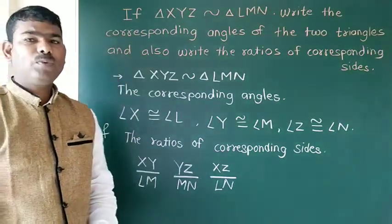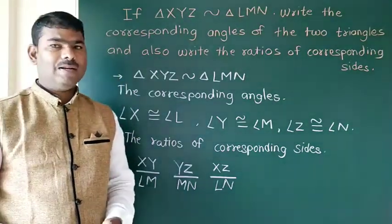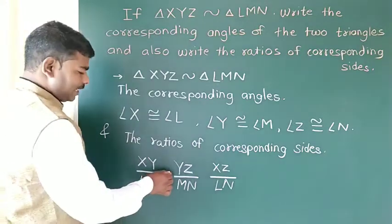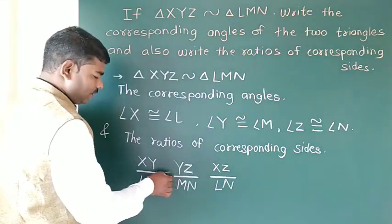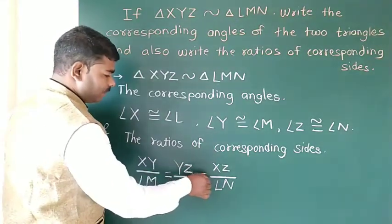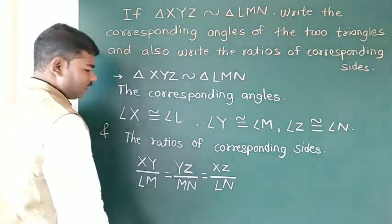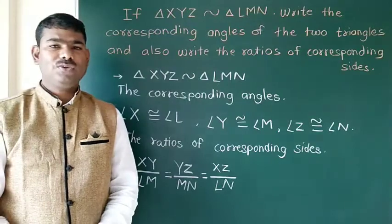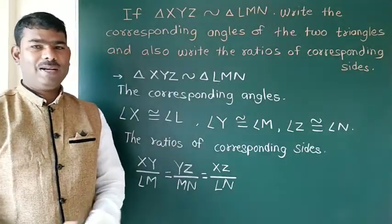If we have two similar triangles, then the corresponding sides are in proportion, which means the ratios of corresponding sides are equal.